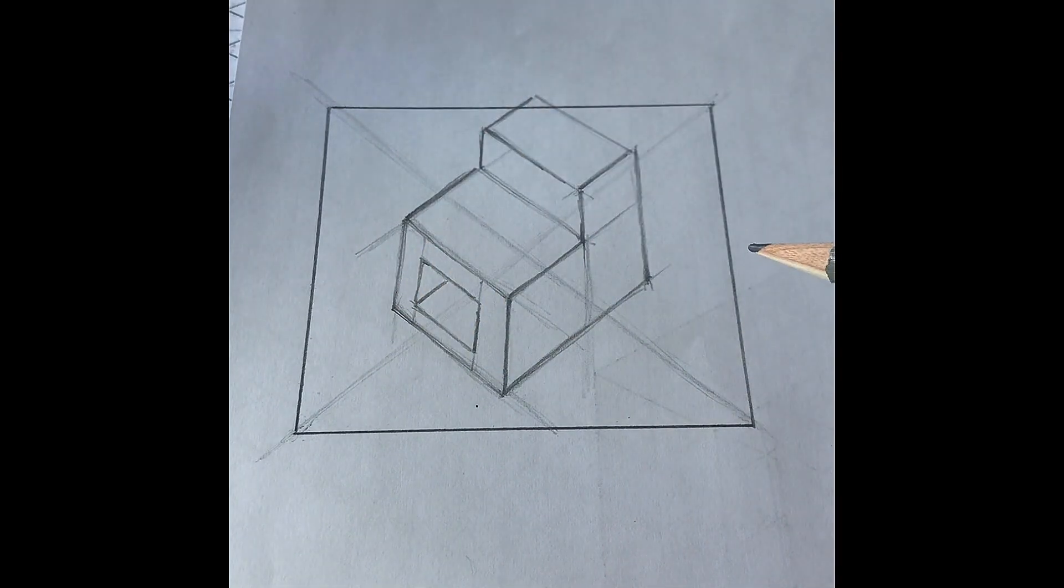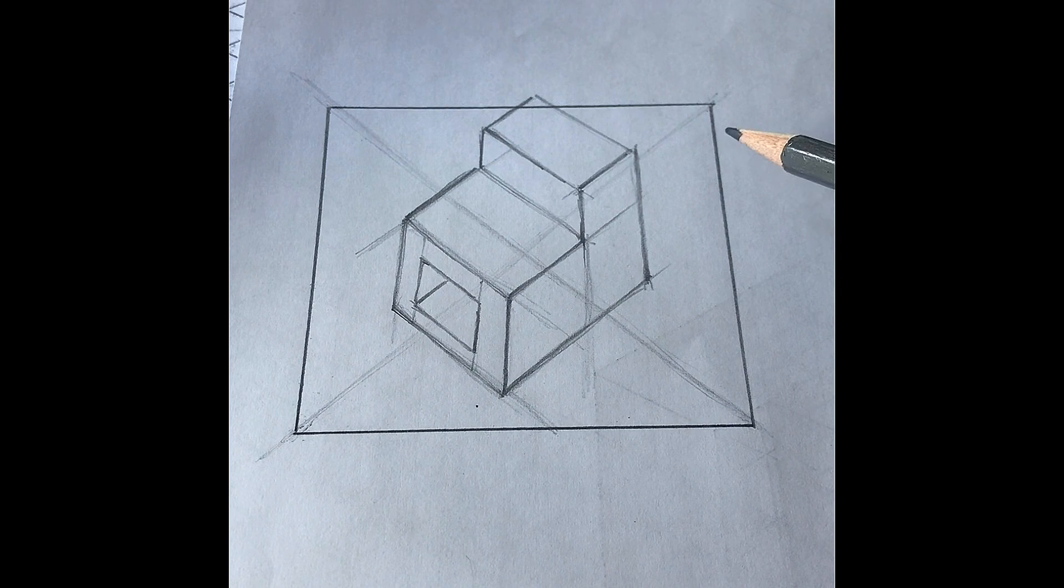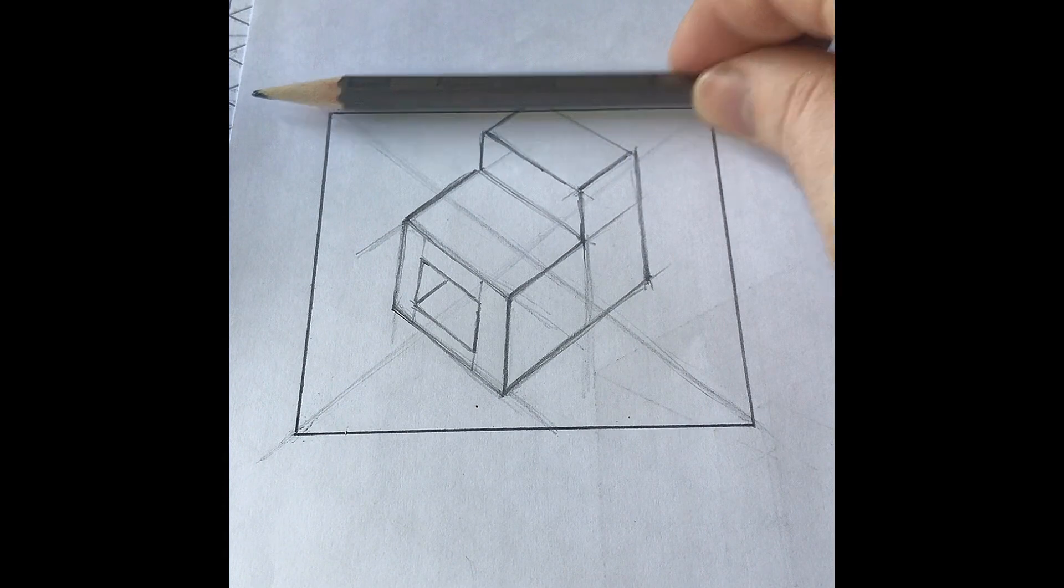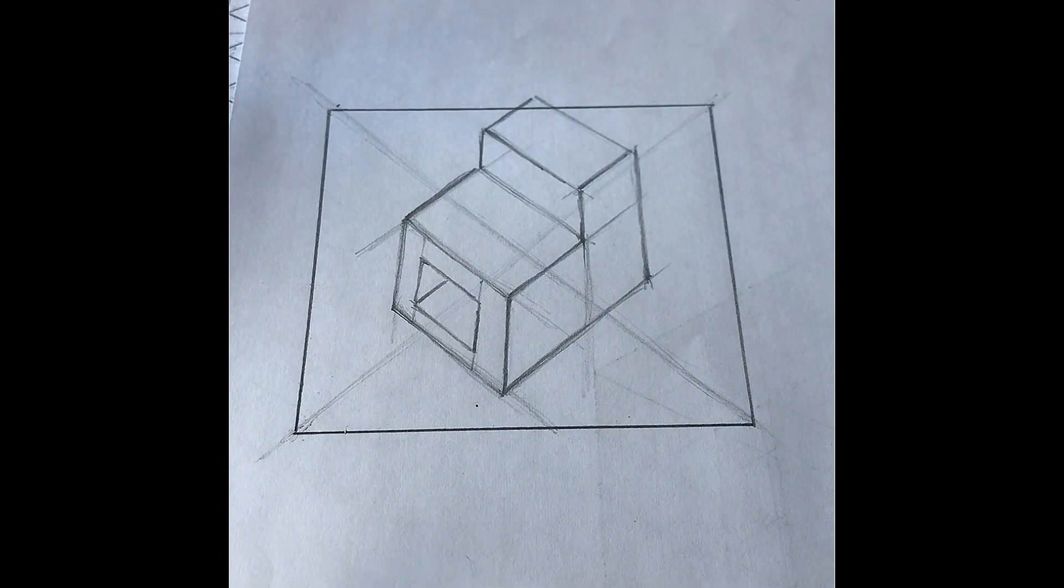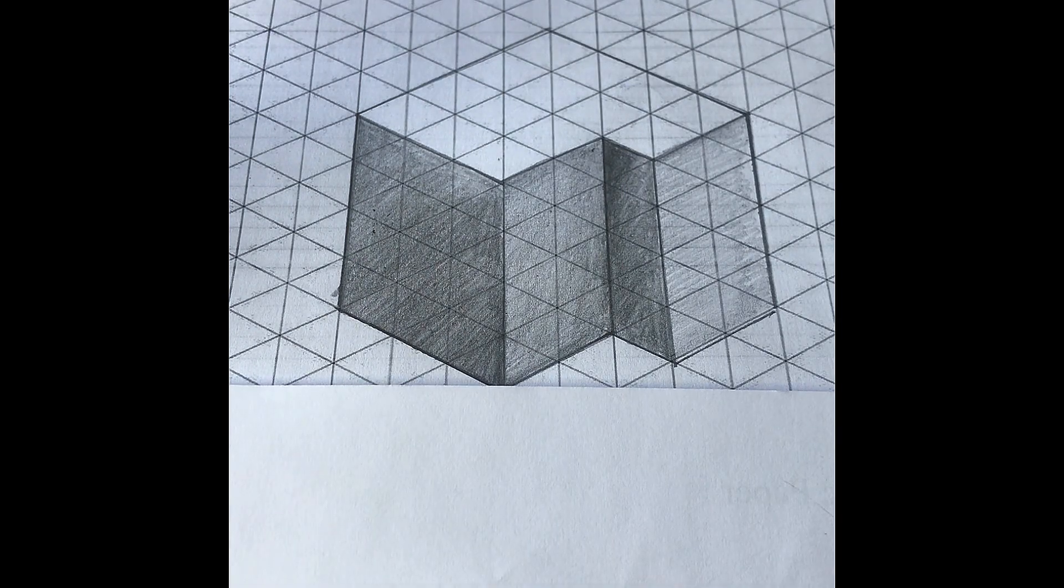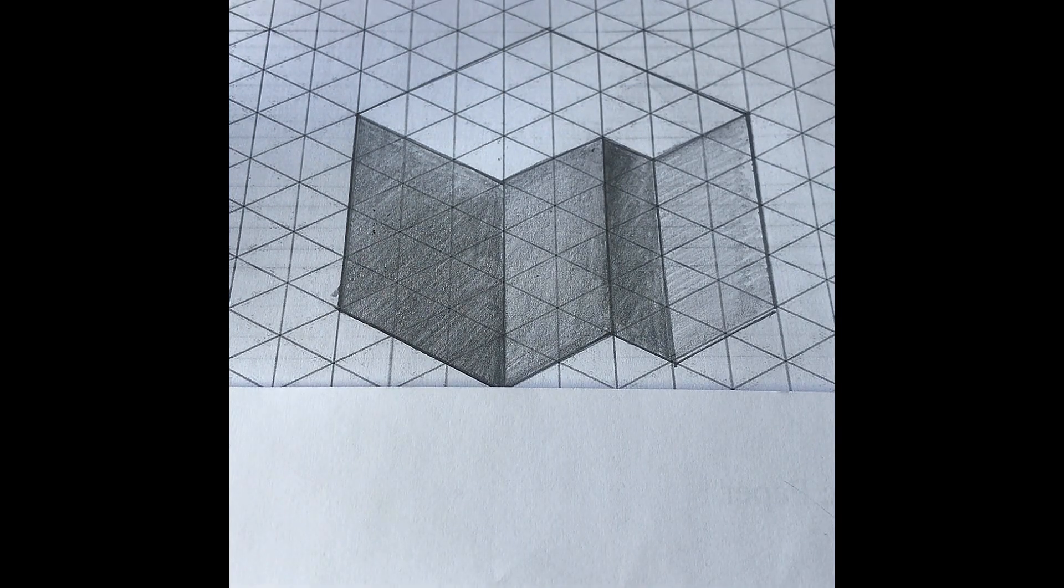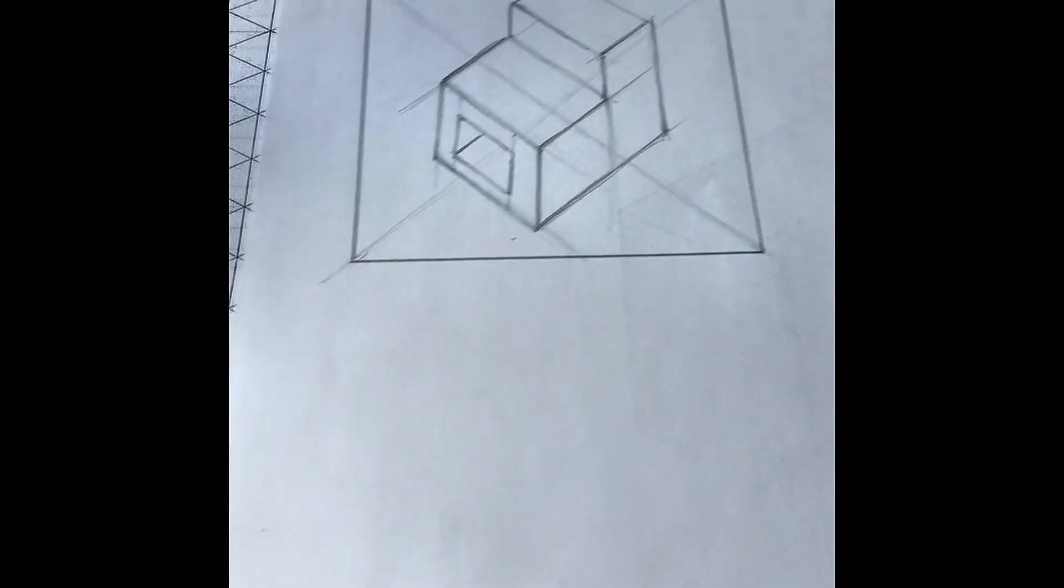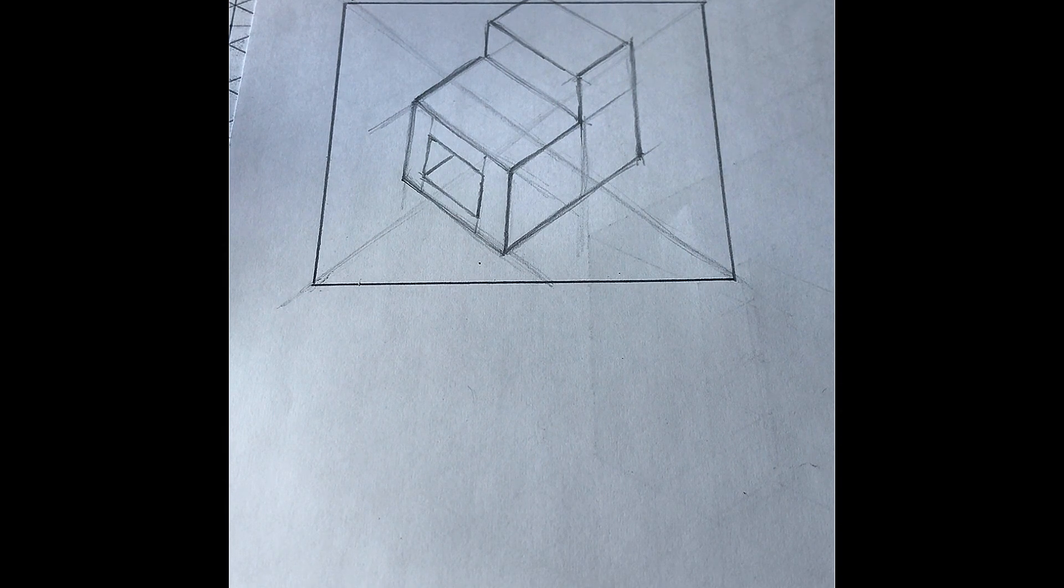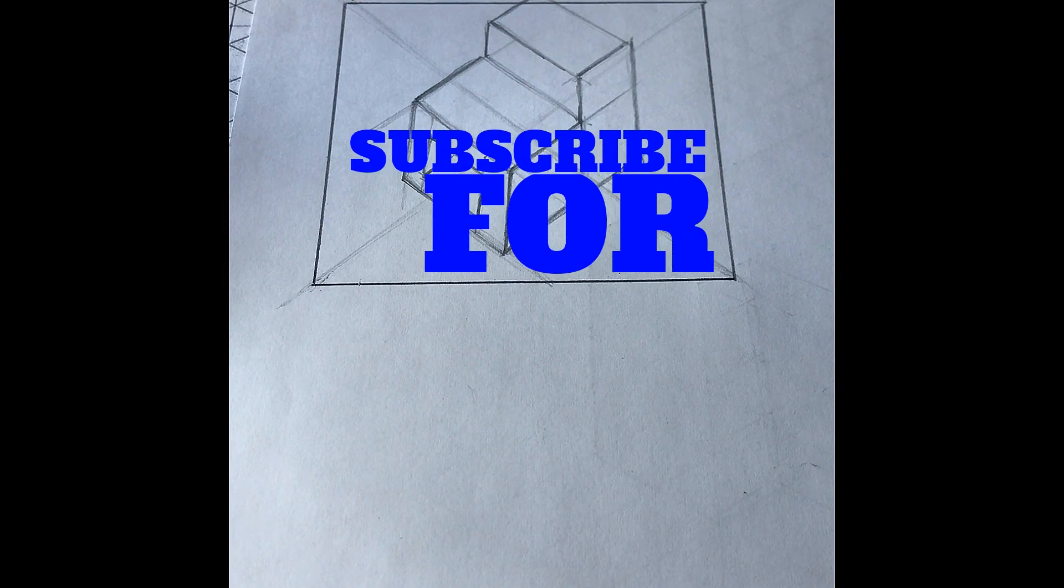So there we have a freehand isometric drawing drawn within the grid formation, which is obviously slightly different from the original drawing we had here on the isometric grid paper. So there's two methods of drawing isometric sketches. Thank you for watching.